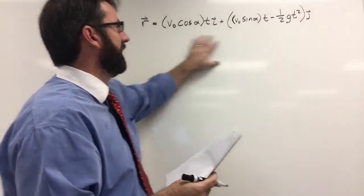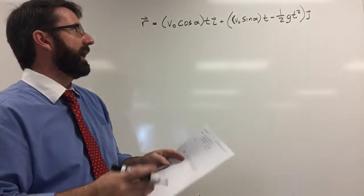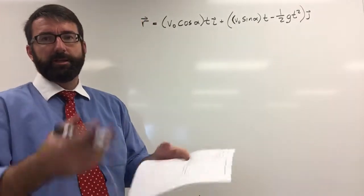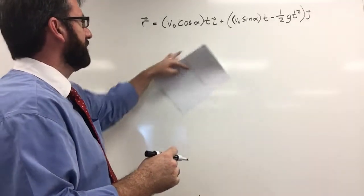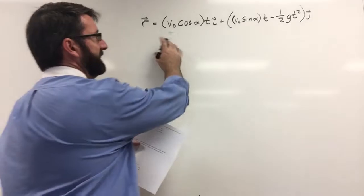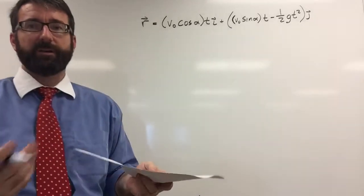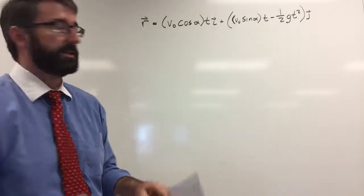So for this one we're going to use our formula for ideal projectile motion that we derived in class. All we really need to do is figure out what each of these variables is going to be from the information given and plug it in.